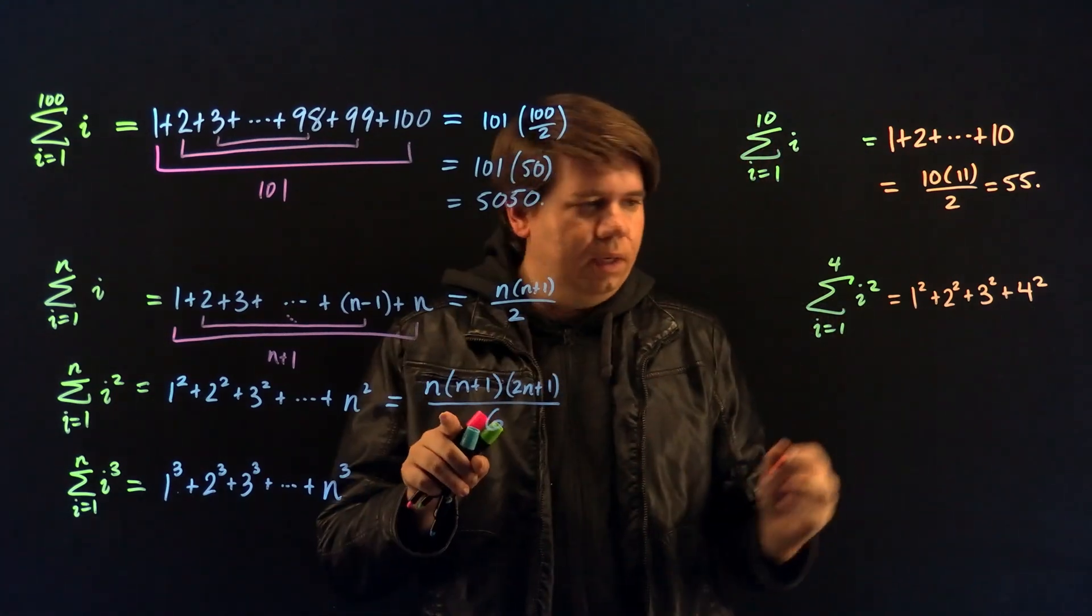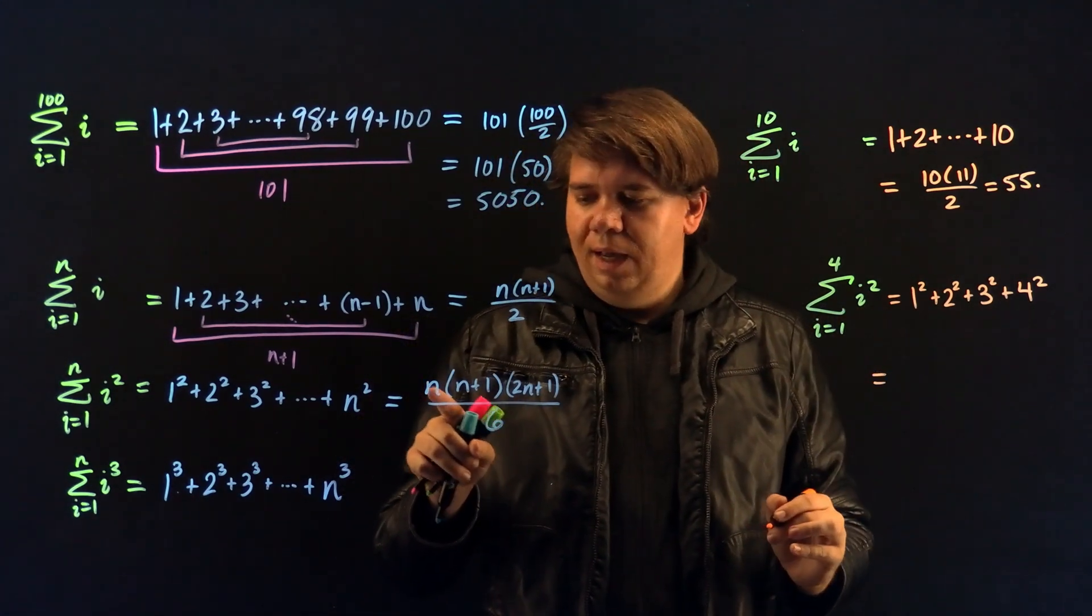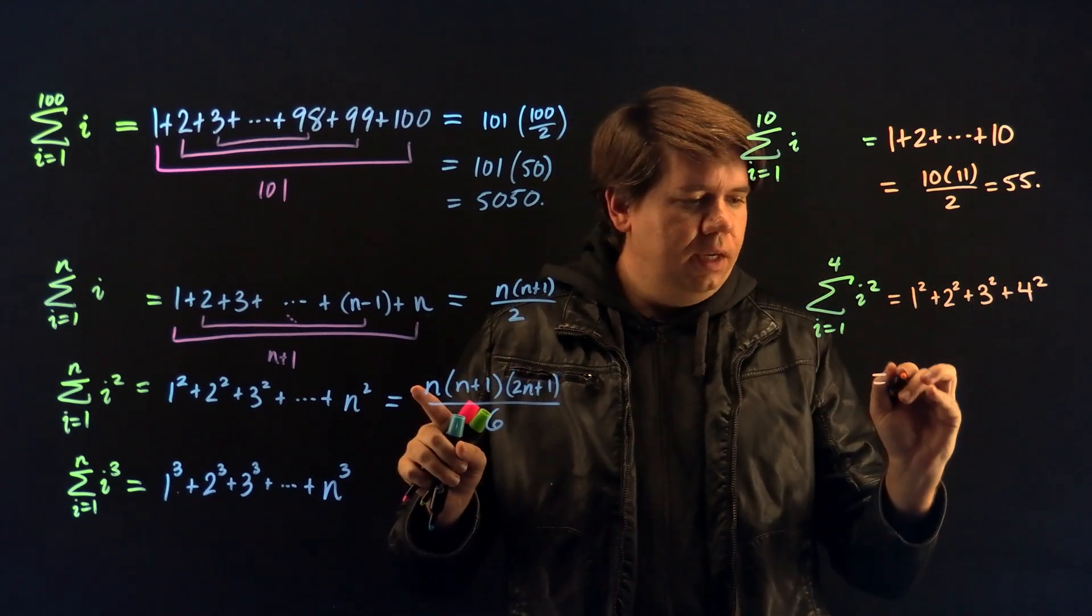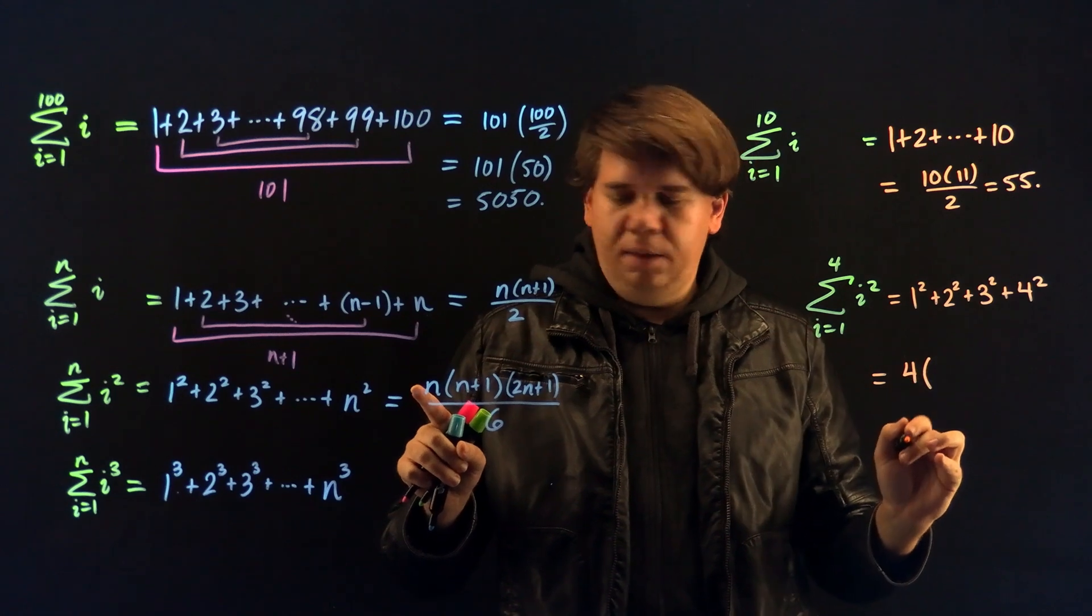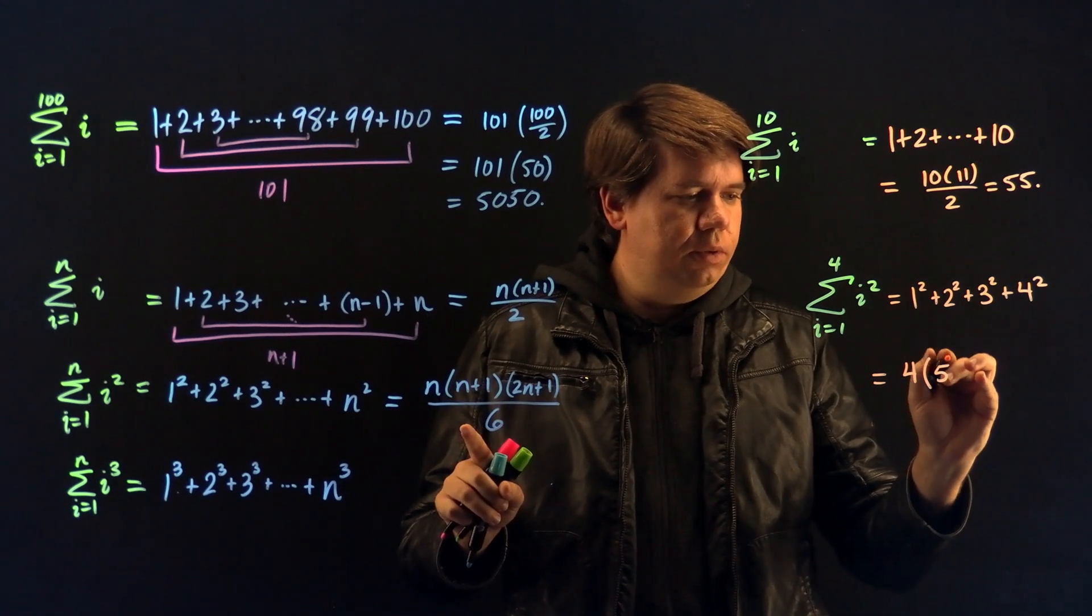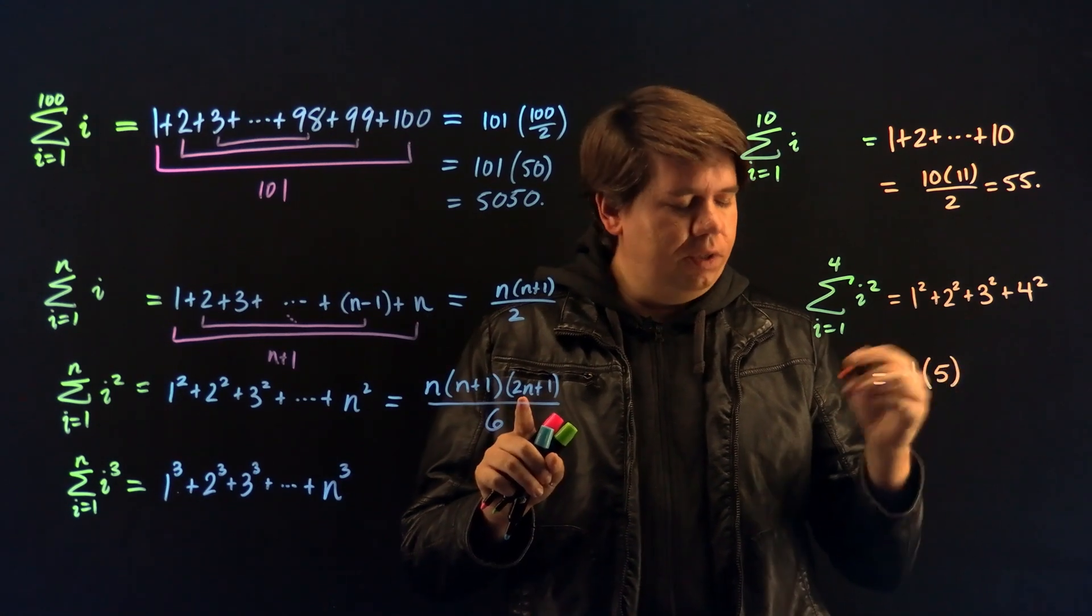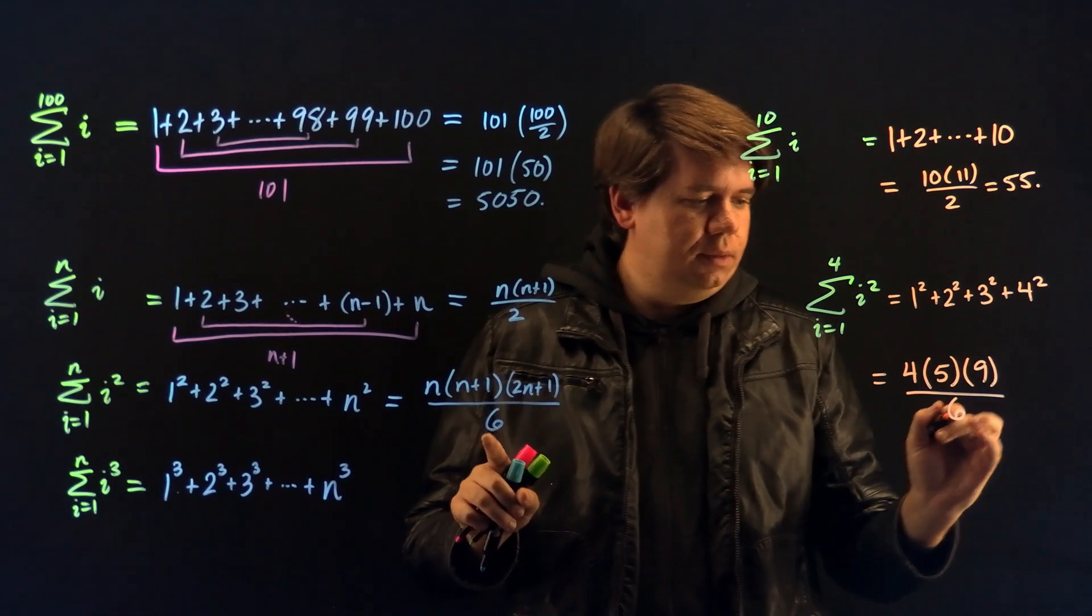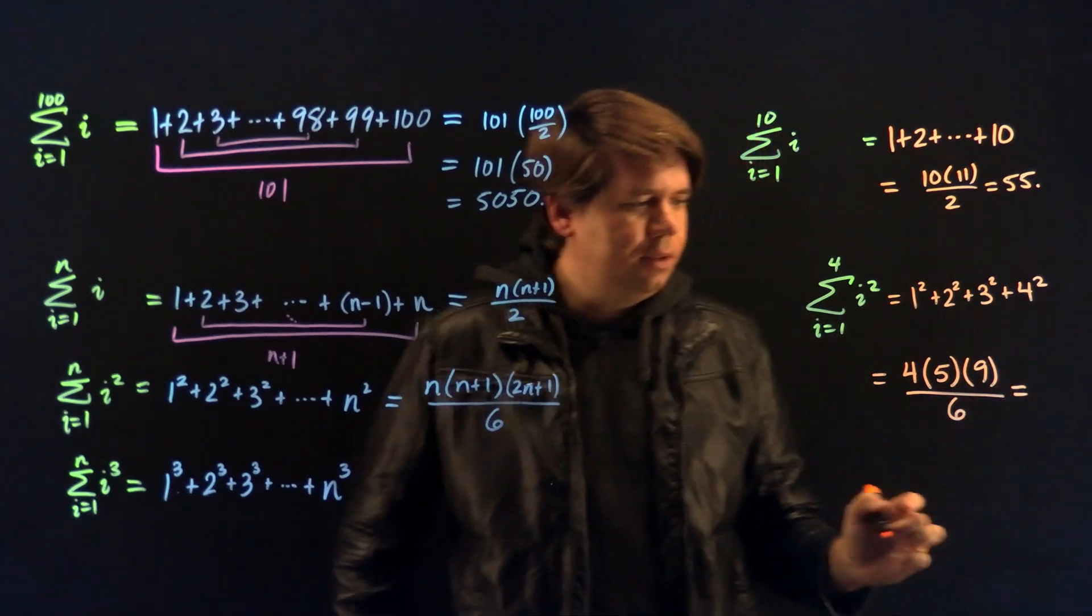According to our formula, this should come out to just be n, which in this case is 4, because we're summing up to where the index is 4. It should just be 4 times 4 plus 1, which is 5, times 4 times 2 plus 1, so that's 9, all over 6.